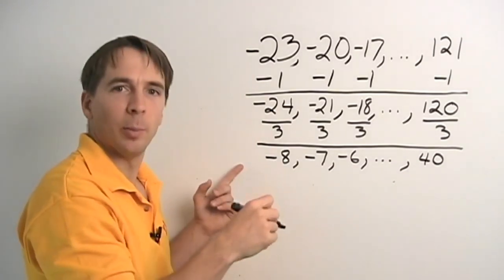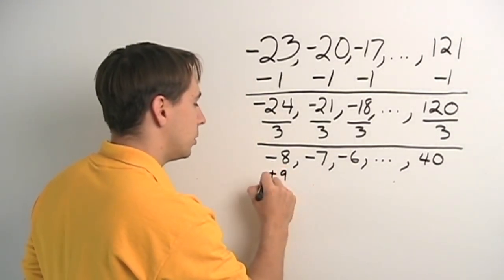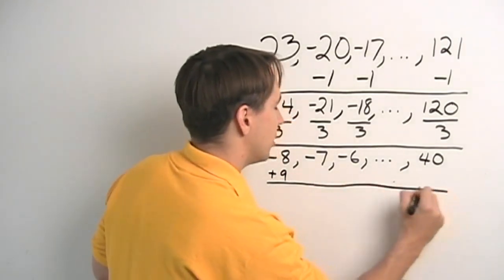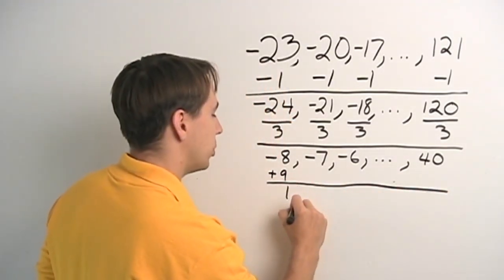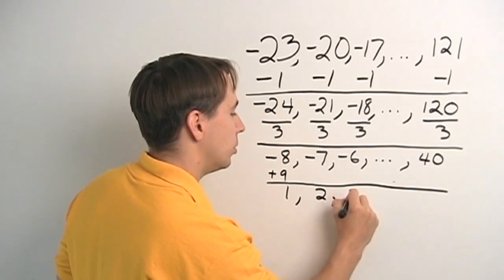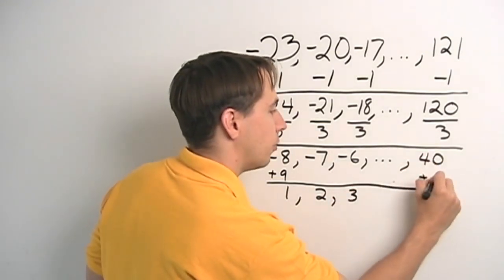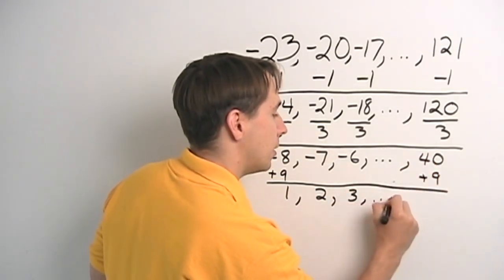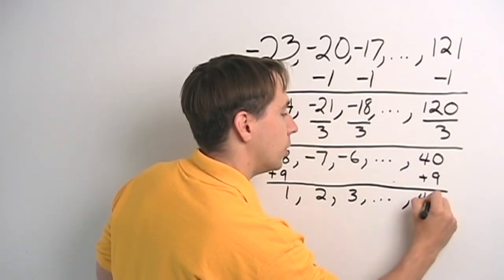And this is a list we know how to deal with. This is a list where we're just going up by 1 each time. We can add 9 to everything in this list, and we get the old 1, 2, 3 back. 1, 2, 3, all the way up to, at the end here, 40 plus 9. That's 49.